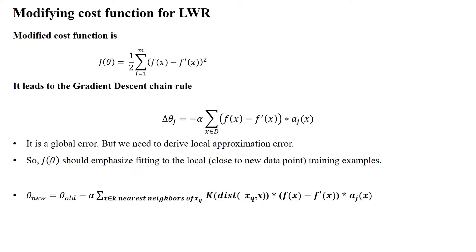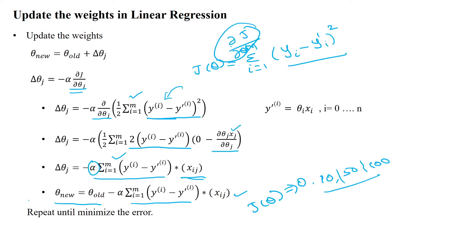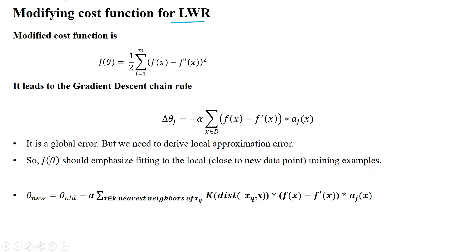The cost function and parameter update shown above are for linear regression. For locally weighted regression, we apply the same approach with a small modification to the optimization function — using the same least square error method but adapted for local fitting.